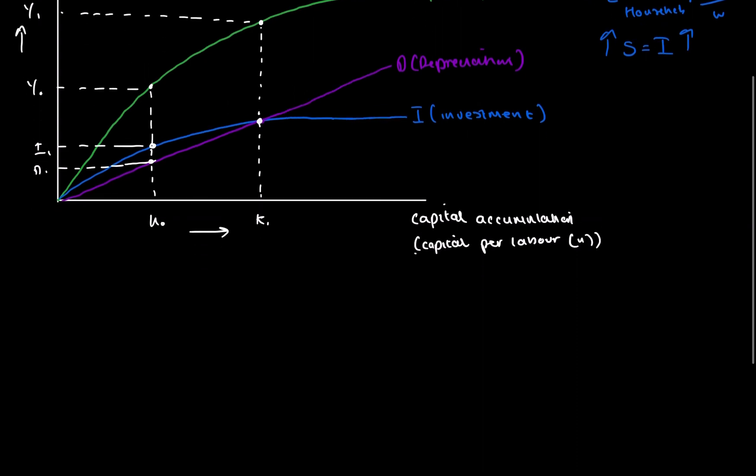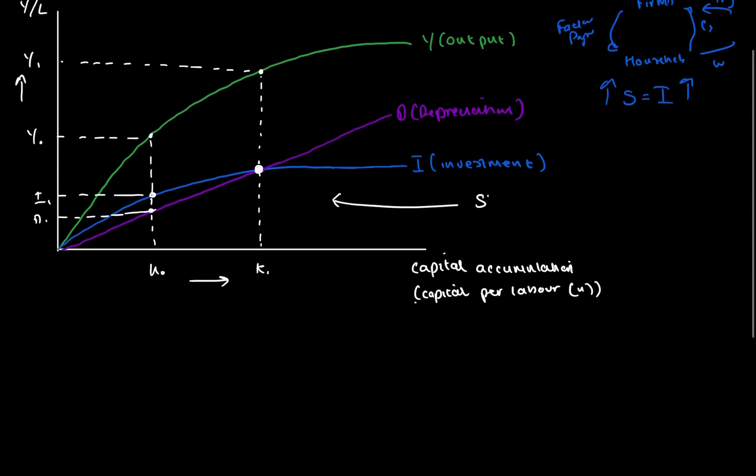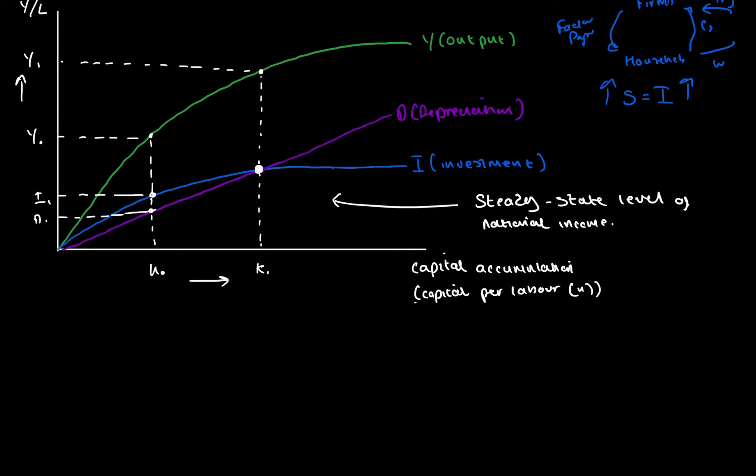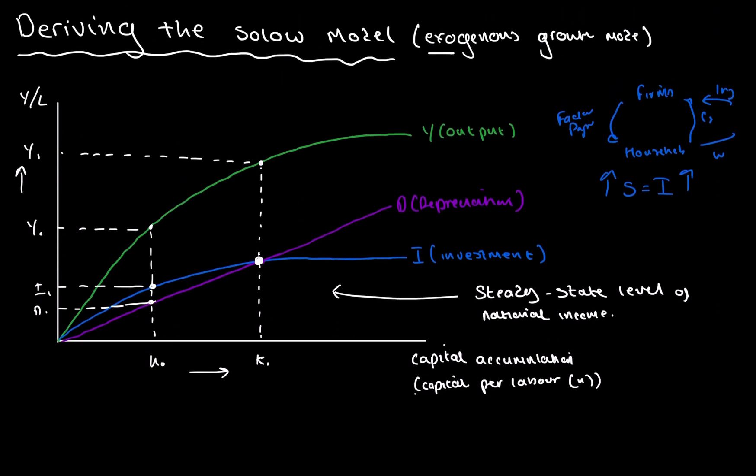And at this point here, it is called our steady state level of national income. If you want the proper definition for this, this is the long-run equilibrium level of national income, the level at which all investment is used to maintain the existing stock at its current level. And that is essentially the Solow model. This is obviously, remember, the exogenous model.